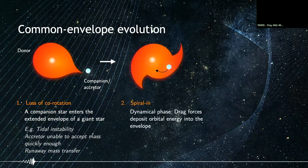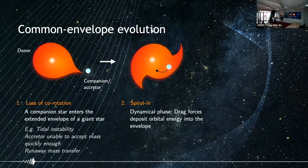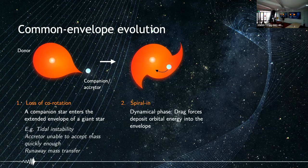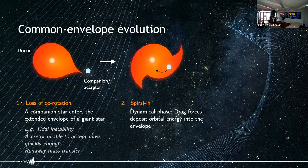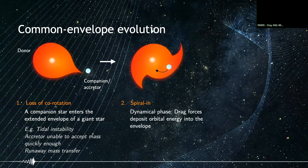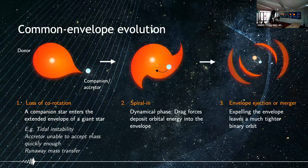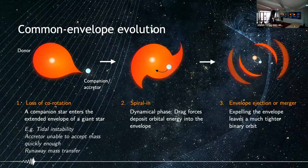Once the companion enters the giant envelope, the so-called dynamical phase or spiral-in of the common envelope begins. Starting from a wide orbit, drag forces remove orbital energy and angular momentum from the two stars and deposit them into the envelope. If enough energy is deposited, the envelope could be expelled; if not, the two stellar cores inside the common envelope would merge.